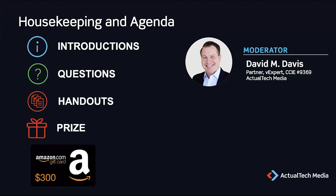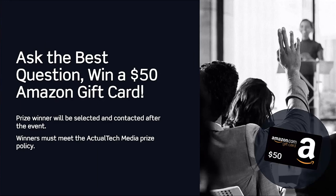I encourage you to check out the handouts tab — there you'll find a link to the Druva free trial that you'll be learning about today. We also have our Amazon $300 gift card door prize, and I'll announce the winner at the end of the live event. If you're watching on demand, the drawing has already occurred. The prize terms can be found in the handouts tab. We also have our best question prize today — a $50 Amazon gift card — and the winner will be announced via email after the event.